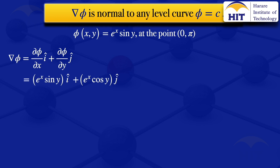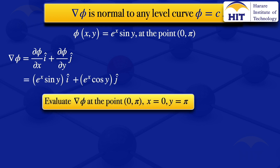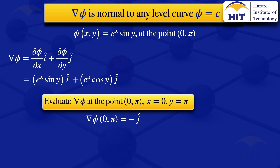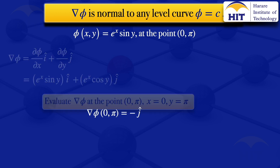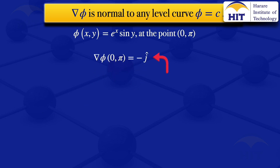The next step is to evaluate grad φ at the point (0, π). We set x = 0, y = π and substitute into our grad φ. On the first part, sin(π) = 0, so the i-component becomes 0. On the second part, e^0 = 1 and cos(π) = −1, giving −1. So grad φ at (0, π) equals −j. This gives us the normal to the level curve e^x · sin(y) = c.